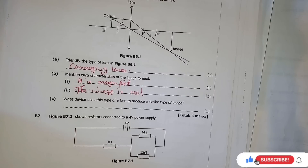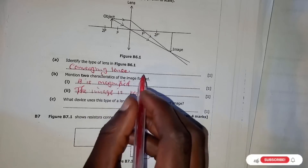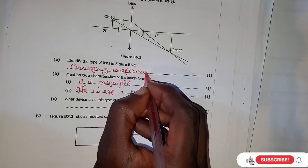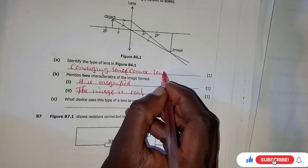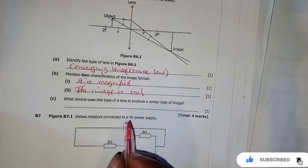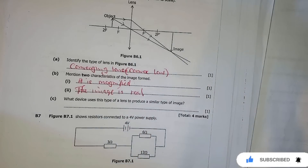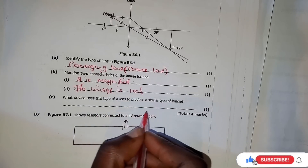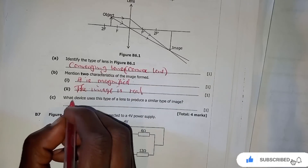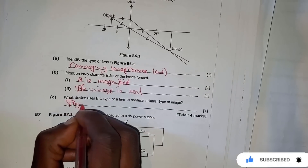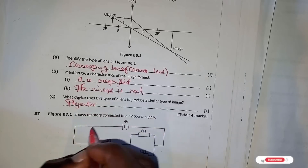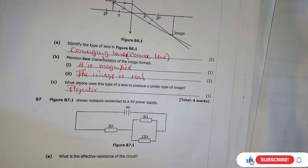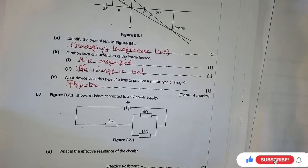The last question is: what device uses this type of lens? By the way, this is also called the convex lens. What device uses this type of convex lens to produce a similar type of image? There are a lot of devices that use this type of lens. You can use the projector, which projects the image onto the projector screen.